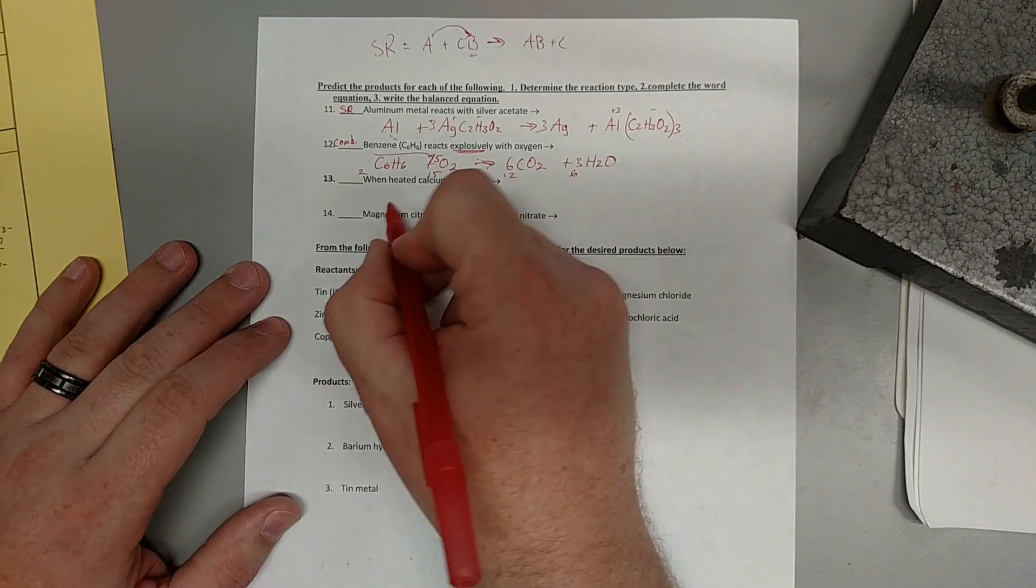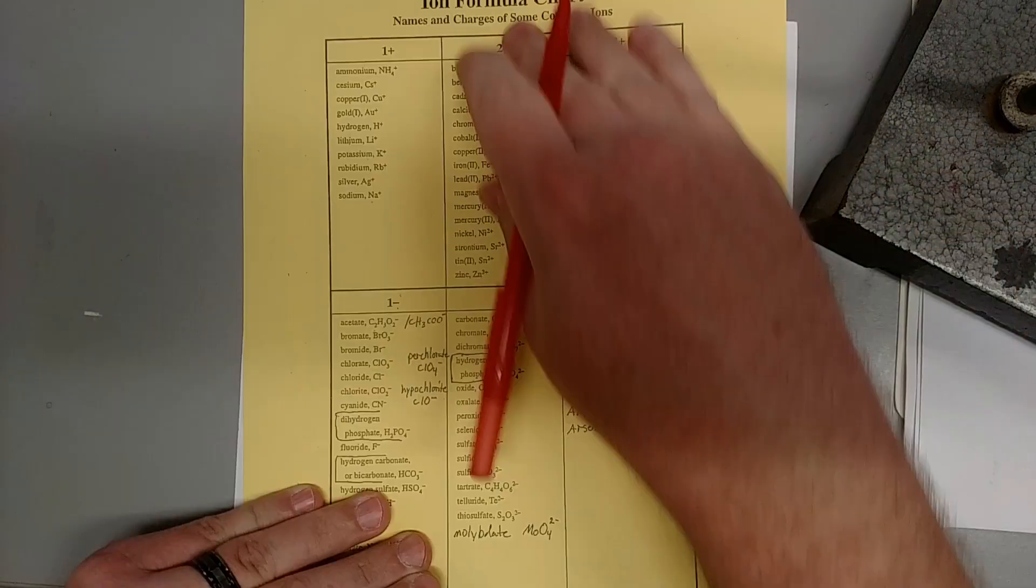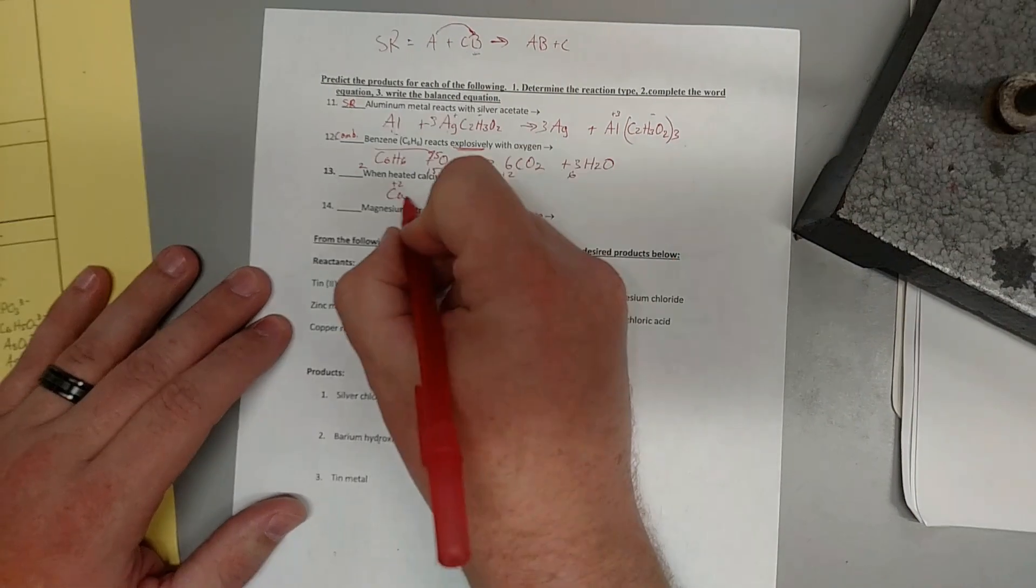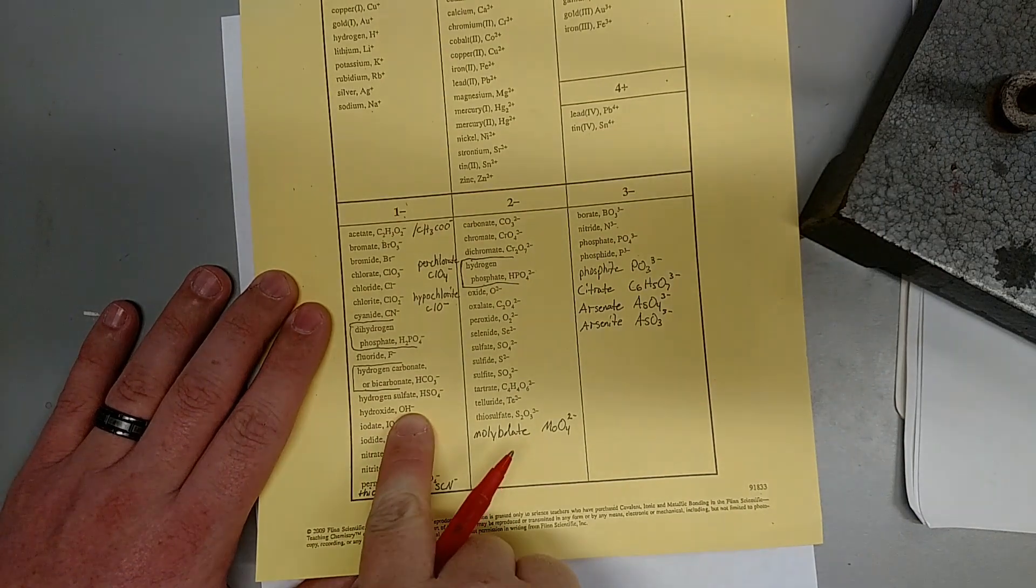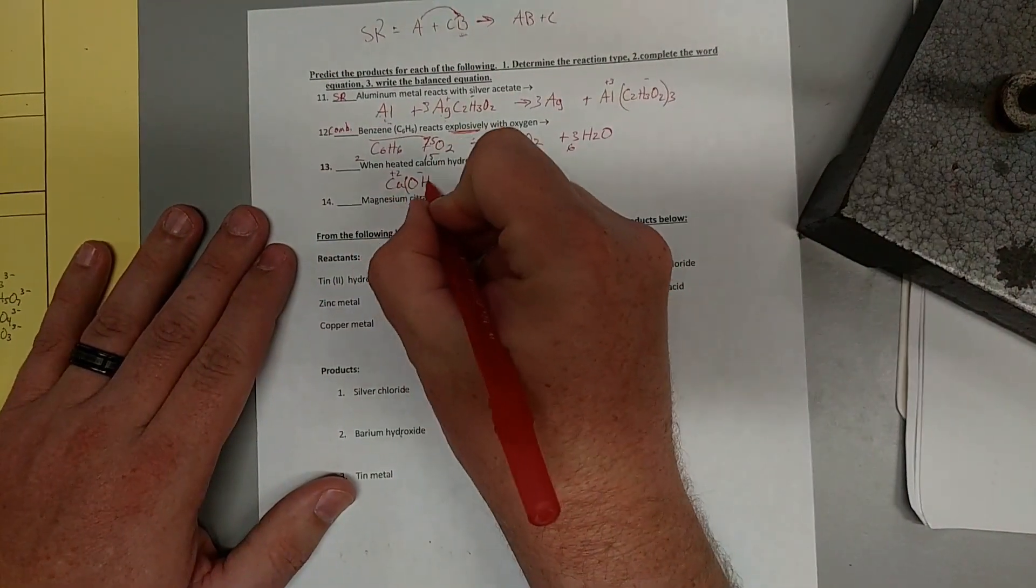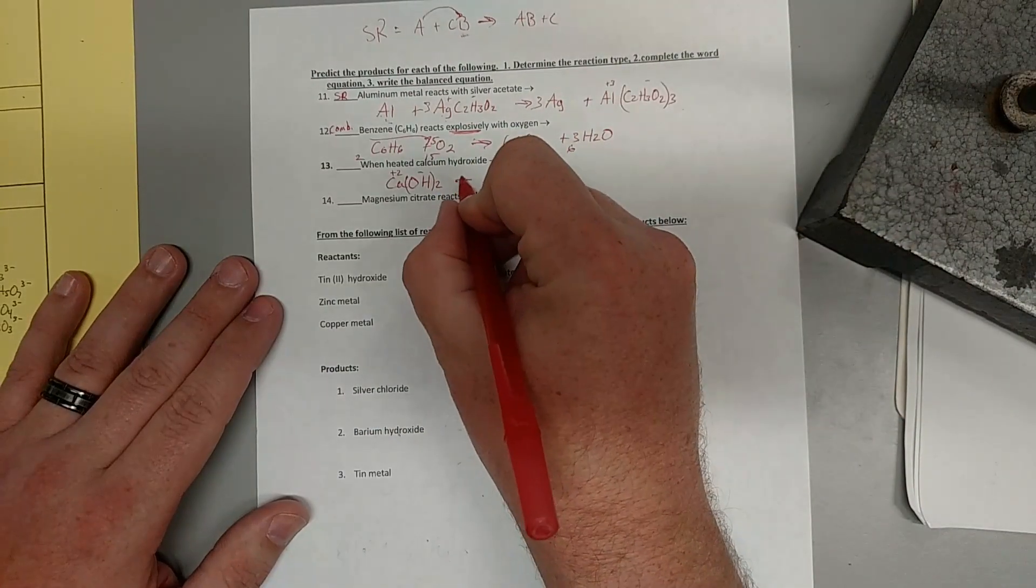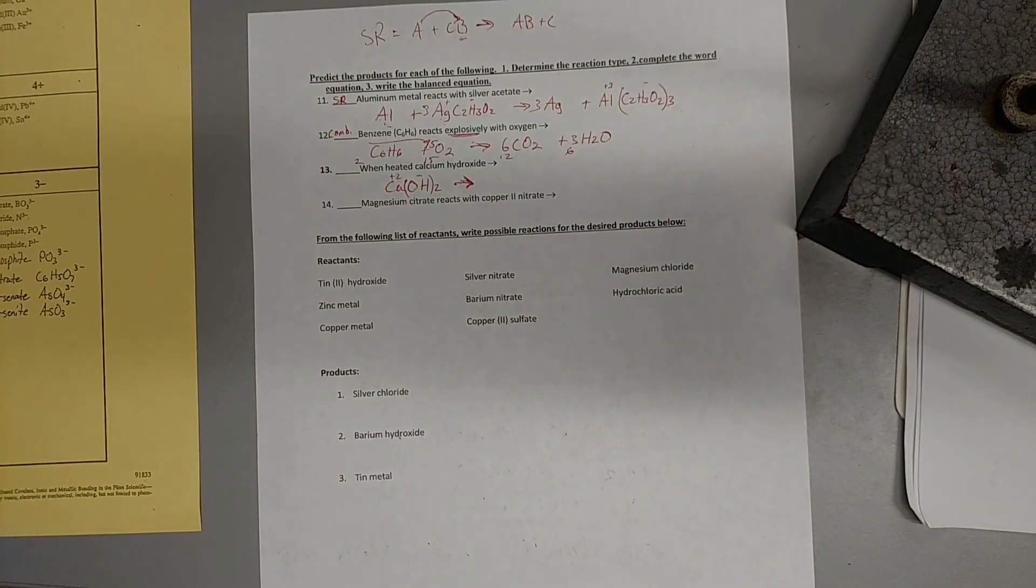Our next reaction says calcium hydroxide. Calcium is a plus two. Again, you're going here, you're looking for calcium. It says plus two. Hydroxide, we did in a previous video. It's OH. It's minus one. But again, look for it right there. Negative one, hydroxide. To balance this out, we need the two to go down there.